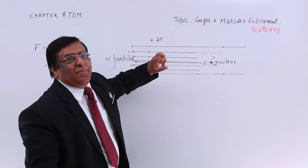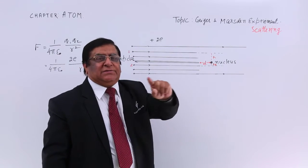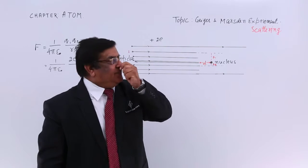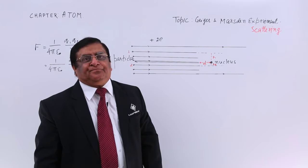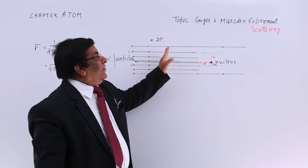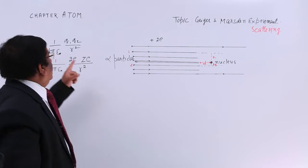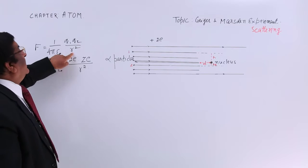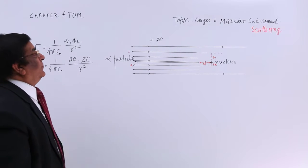That is for the alpha particles. Now nucleus as per our assumption is having all the positive charges of the atoms at one place. So positive to positive there will be repulsion. Now because of that repulsion there will be a force and the force of repulsion depends upon the distance. Closer is the distance, smaller is the distance, more will be force.